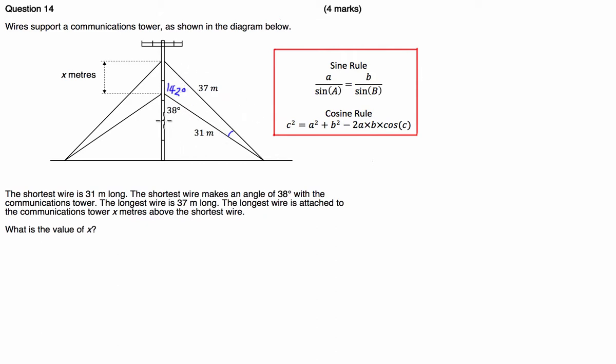Now what we're going to use is the sine rule, which basically states that the ratio of a side to the sine of the angle opposite that side will be consistent throughout a triangle. So I'm going to use this side and the opposite angle along with this side and this angle in here, so we're going to work out this angle here, let's call it angle A. So we're going to say 37 divided by the sine of 142 is going to be equal to 31 metres divided by the sine of A.